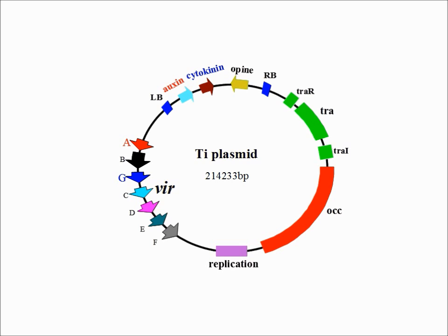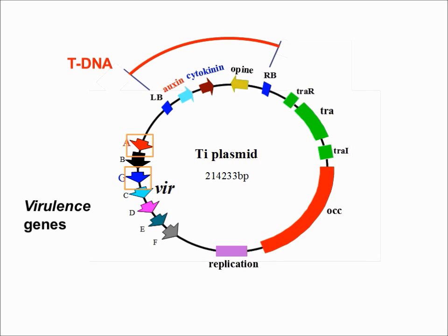Ti stands for tumor-inducing plasmid. This plasmid contains both the genes coding for the VIR-A and VIR-G proteins already discussed, as well as other virulence genes. The expression of these genes results in the transfer of the plasmid's T-DNA, or transfer DNA, into the host cell.